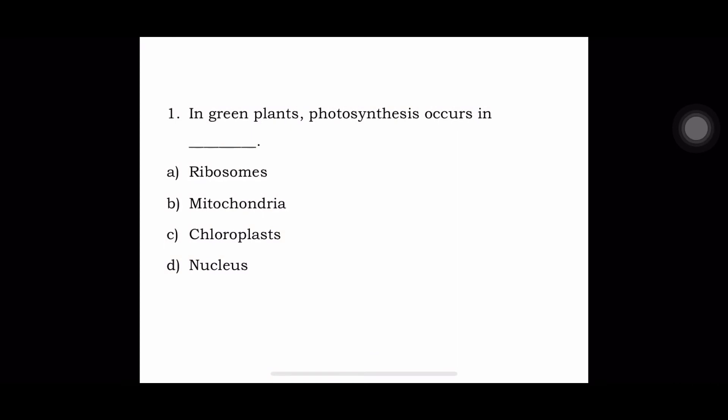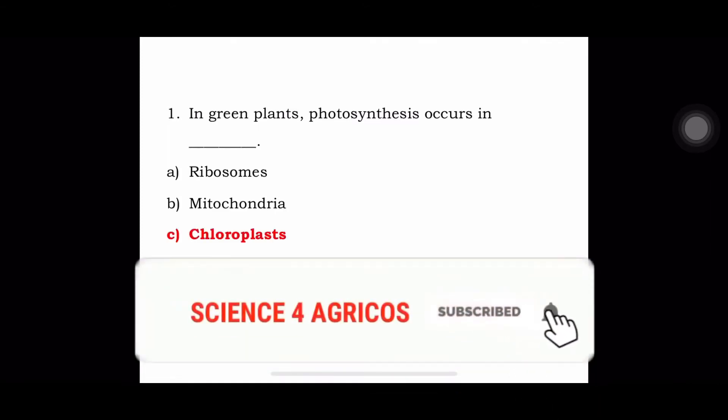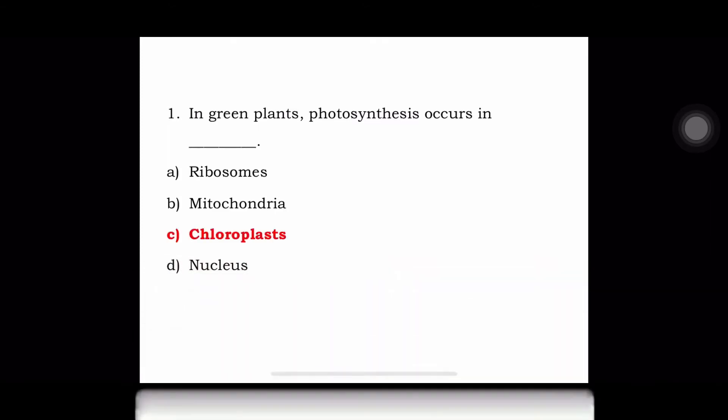First question: In green plants, photosynthesis occurs in a) ribosomes, b) mitochondria, c) chloroplast, or d) nucleus. The answer is photosynthesis occurs in chloroplast.